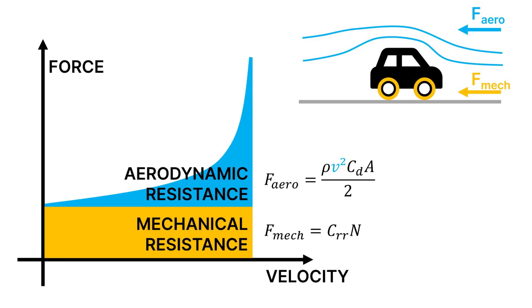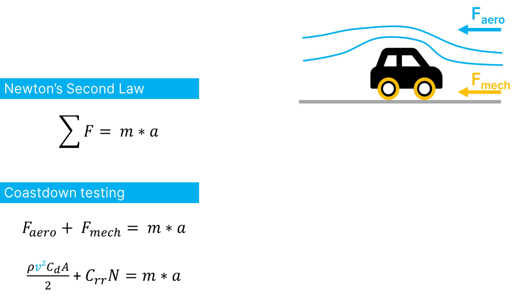Newton's famous second law states that the acceleration, or deceleration, of an object is directly proportional to the sum of the forces acting on it. Applied to our simplified coast-down test, this results in the following equation.